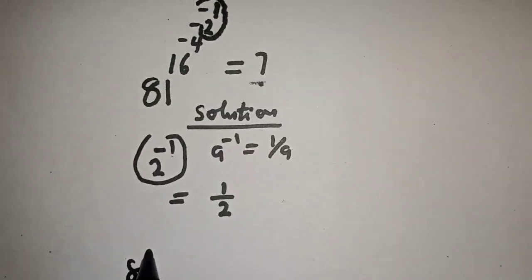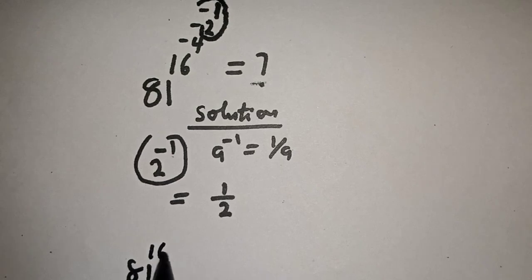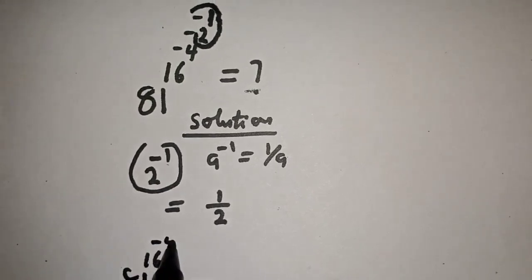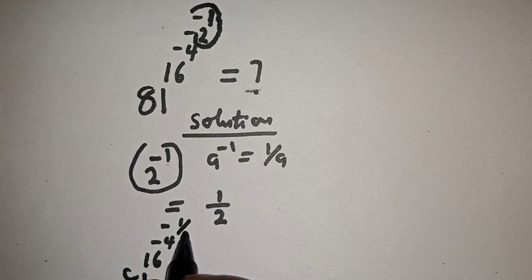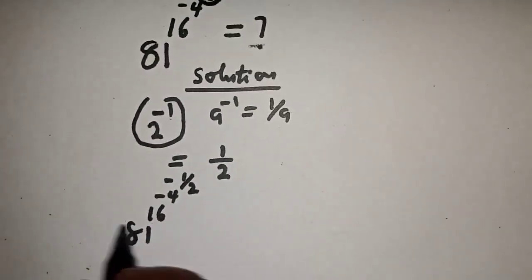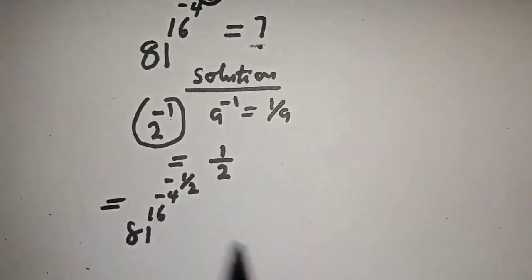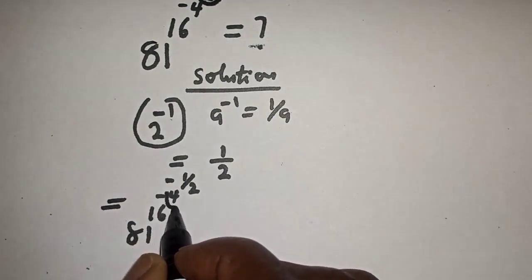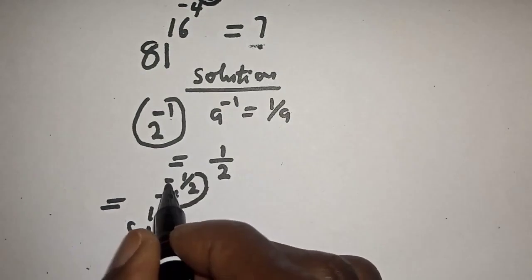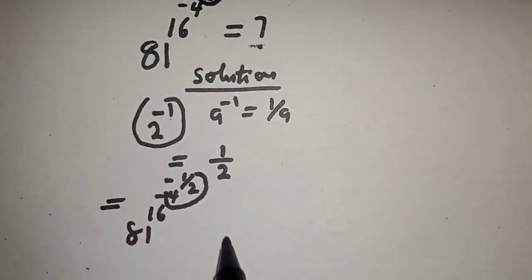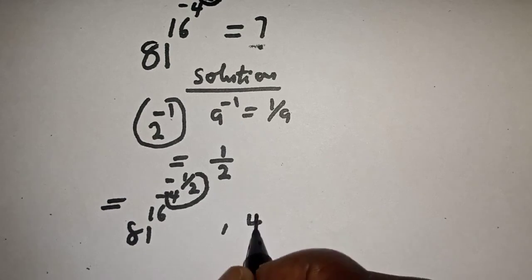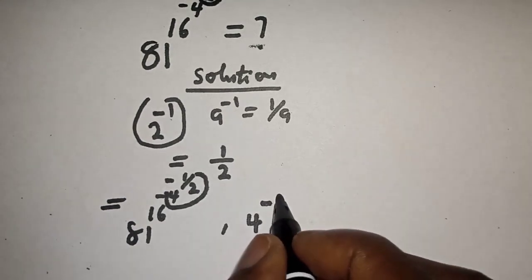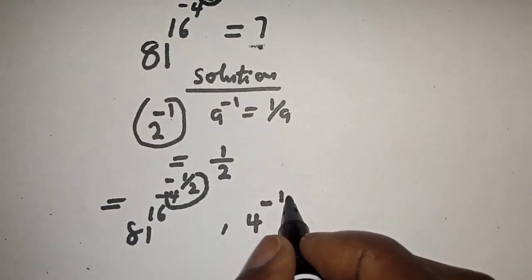We now have 81 raised to power 16 raised to power minus 4, then raised to power minus 1 over 2. Let's work with this exponent again: 4 raised to power minus 1 over 2.